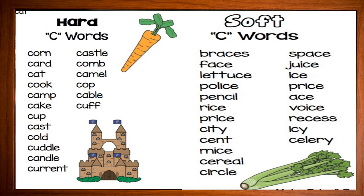These are the examples of hard C words: corn, card, catch, cook, cupcake, cut, cup, cold, cuddle, candle, current, castle, comb, camel, and cable.